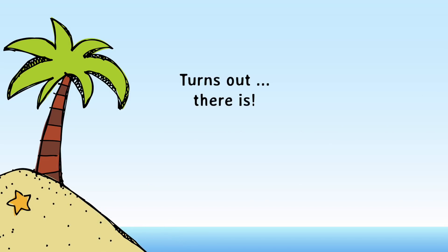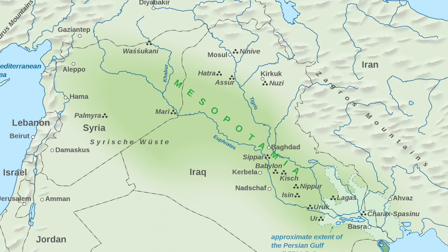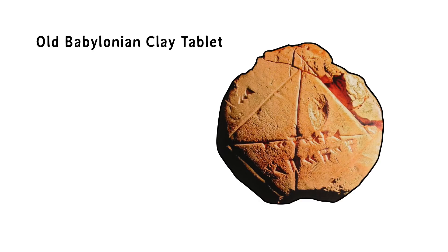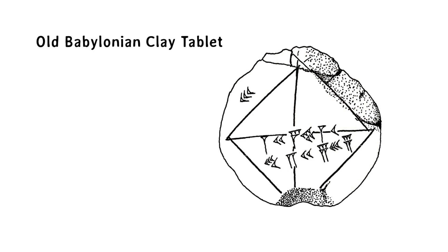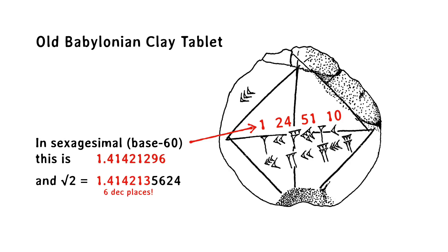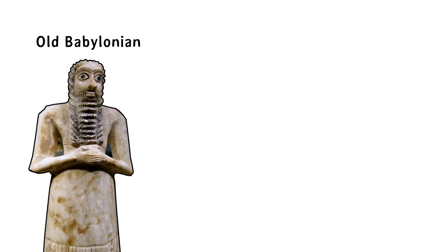Well, it turns out there is, and it was discovered about 4,000 years ago in ancient Mesopotamia. Amongst the remains of the old city of Babylon in what we now call Iraq, some old clay tablets have been found with inscriptions on them that contain the square root of 2 to an amazing degree of accuracy. And these date back to something like 1800 BC.